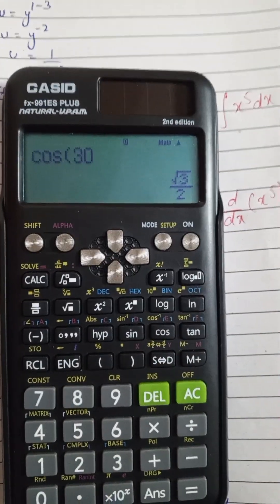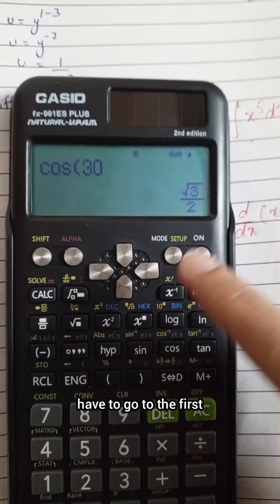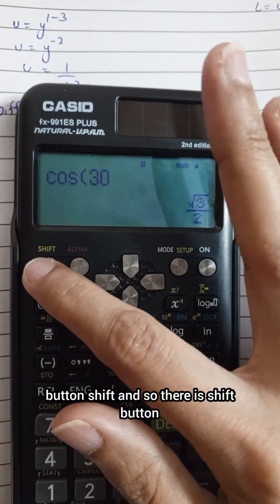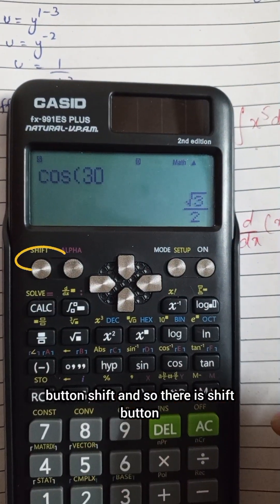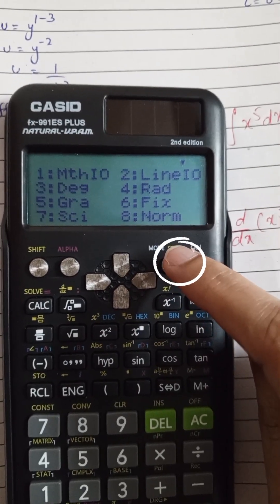Now we have to convert from degrees to radian. To set our calculator from degrees to radian, we have to go to the shift button first, and then click the setup button.